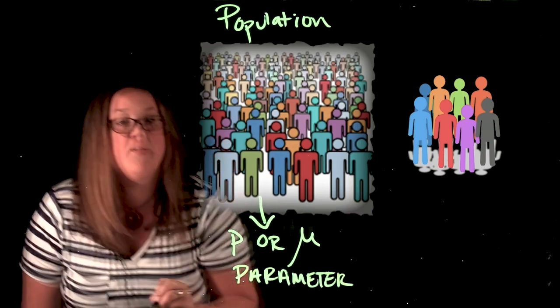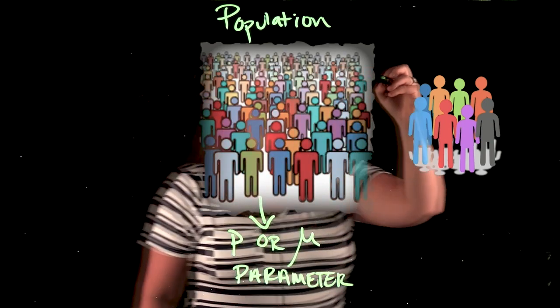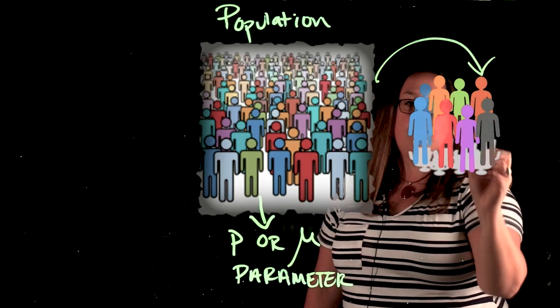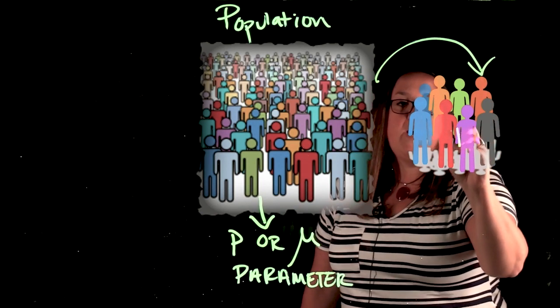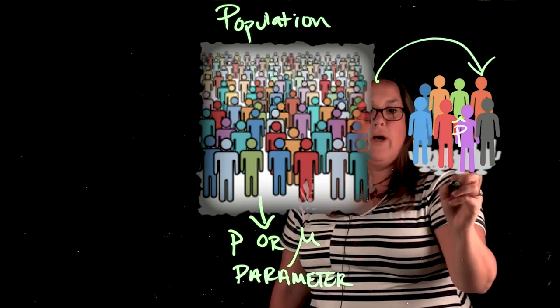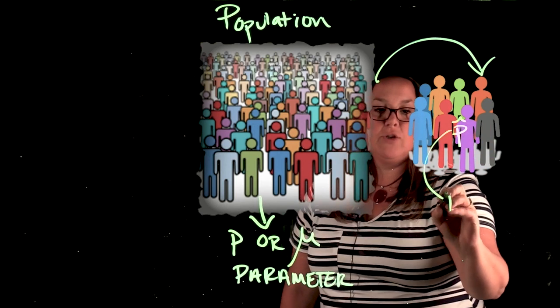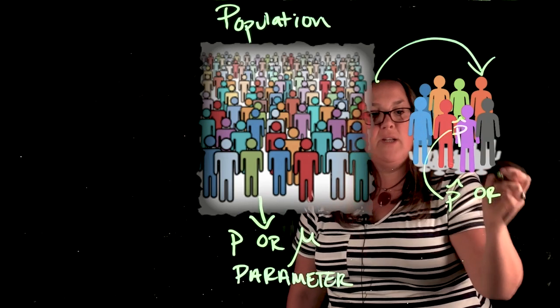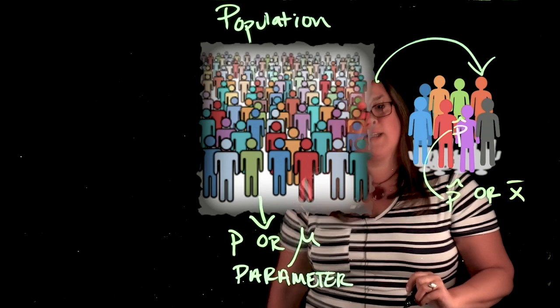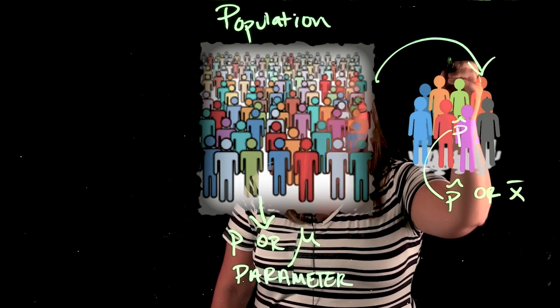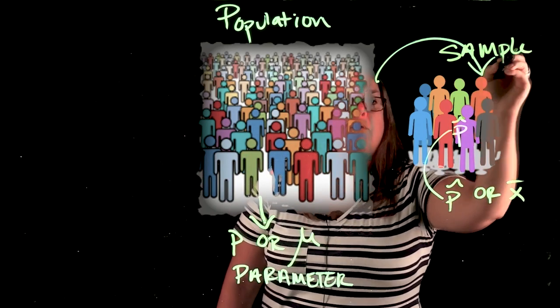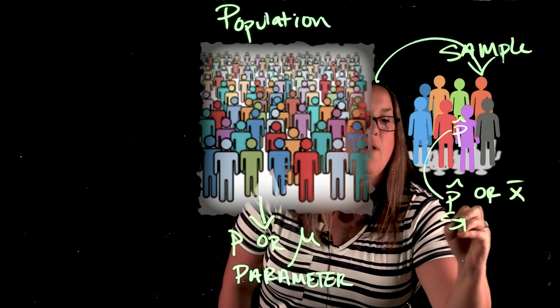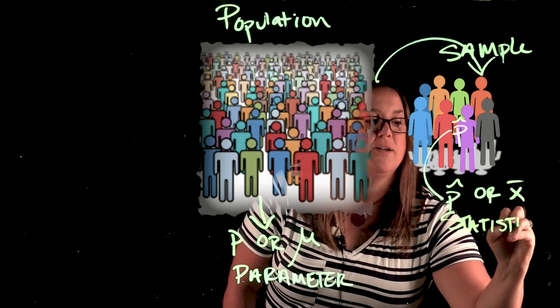Now, we're not normally going to know what these values are. So remember, we've said that we're going to have to take a sample, and hopefully it will be representative. Here, if I had the proportion of people who were blue, that would be a p hat value. Let's actually put that down here. Or if I had the average height of these people, I would have x bar because these measurements are from a sample. And remember, because this is a sample, and these measurements are from the sample, these would be called statistics.